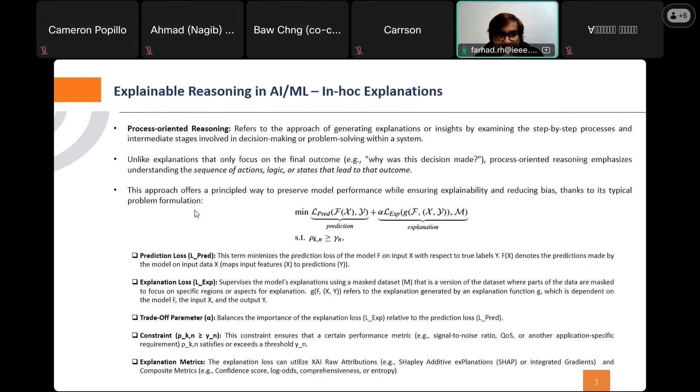So the prediction loss actually minimize the prediction loss of the model F on input X with respect to true labels of Y. That this function, F(X), denotes the prediction made by the model on the input data X or somehow in deep learning, maps input feature X to the prediction Y.